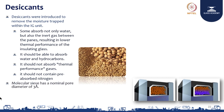Basically, molecular sieve has a normal pore diameter of 3 Angstroms, which is used to identify the desiccant. It has alumina silicate as a base and potassium as a cation. That is the base material which helps prevent condensation.